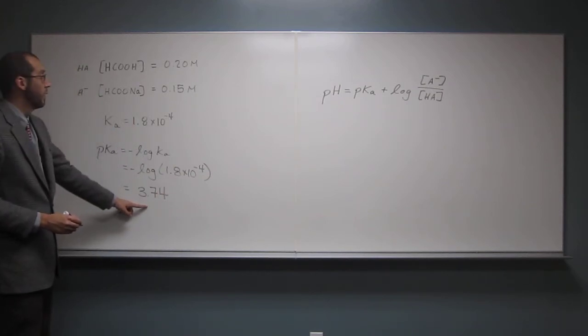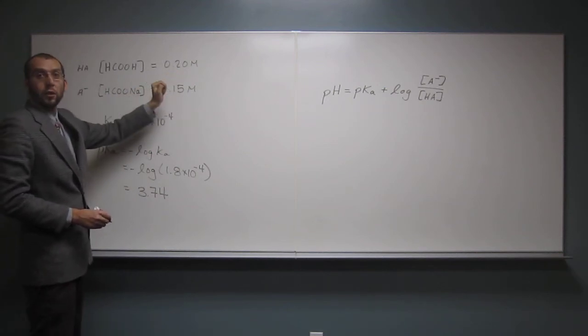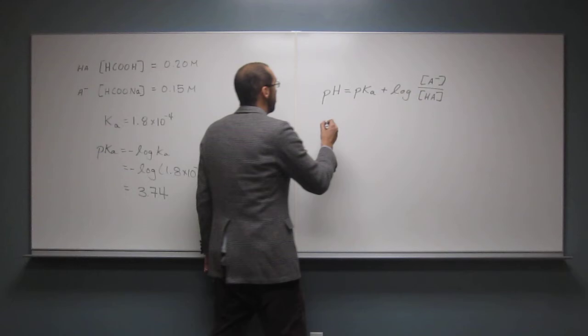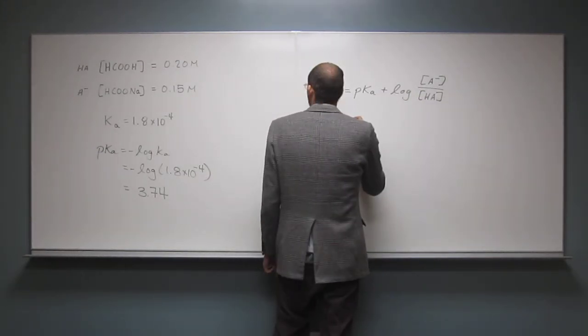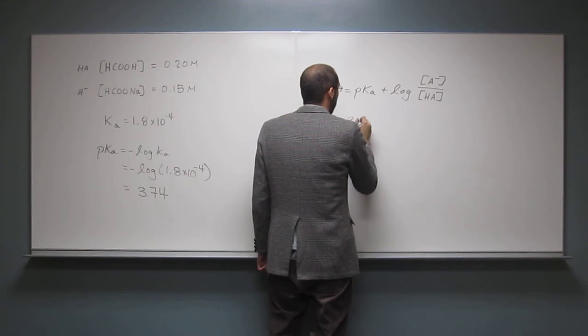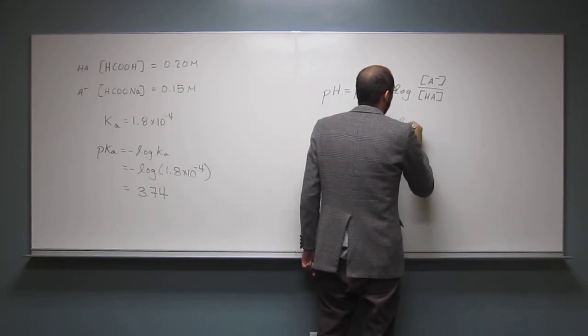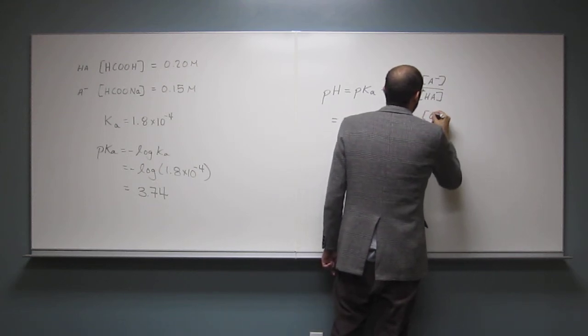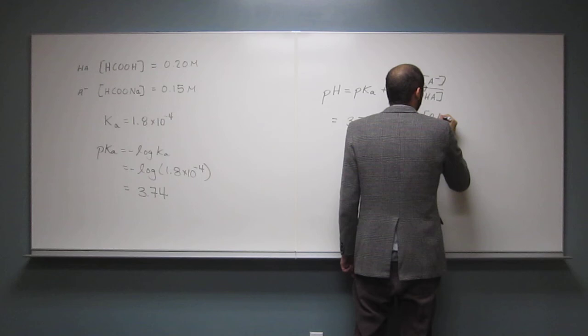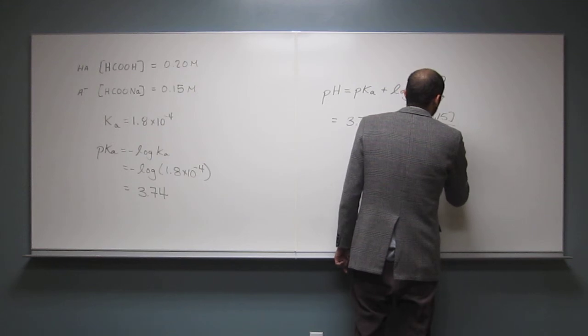So now we have the pKa, we have the concentration of A minus, and we have the concentration of HA, right? So it's just a plug-in-chug problem. So it's a lot easier than doing a whole ice thing, right? So 3.74 plus the log of 0.15 divided by 0.20.